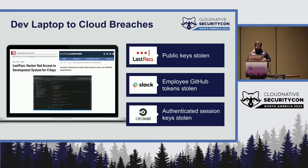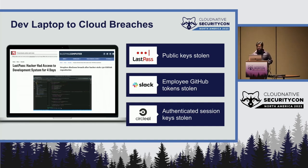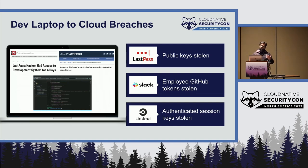Here are the developer breaches that happened recently. You have the LastPass attack, the Slack breach where employee GitHub tokens were stolen, the CircleCI breach where authenticated session keys were stolen. The Dropbox breach was actually a CircleCI imitation phishing attack, whereas the CircleCI incident was an actual attack that targeted the CircleCI organization itself.